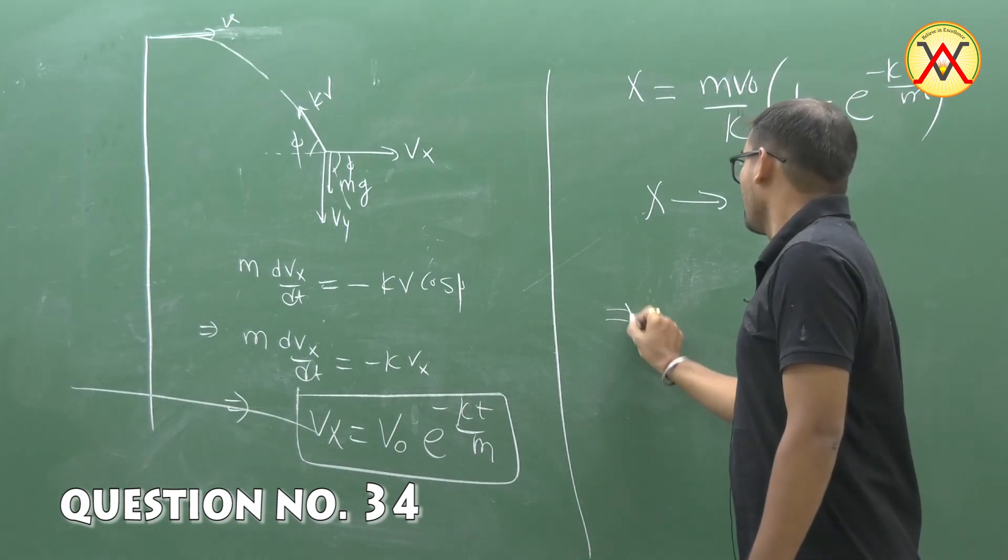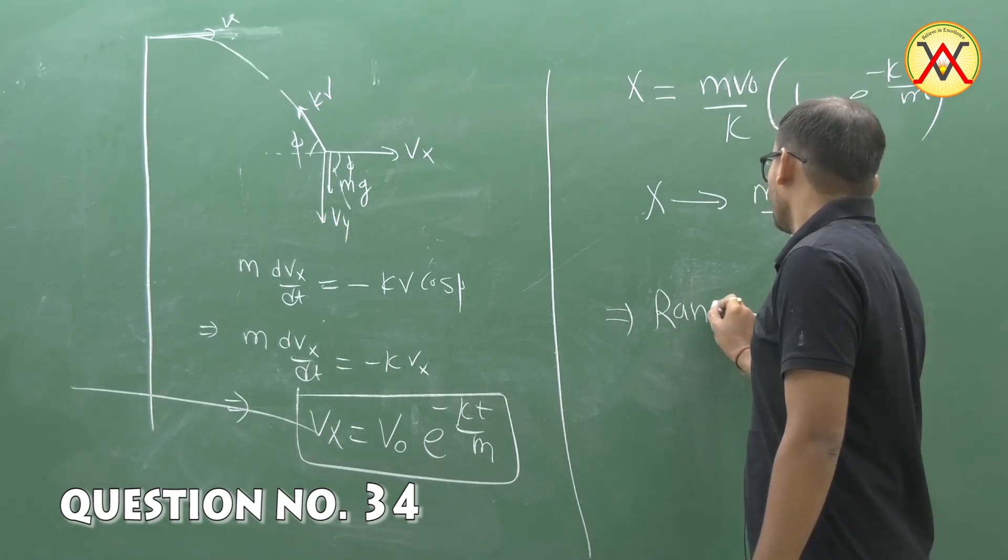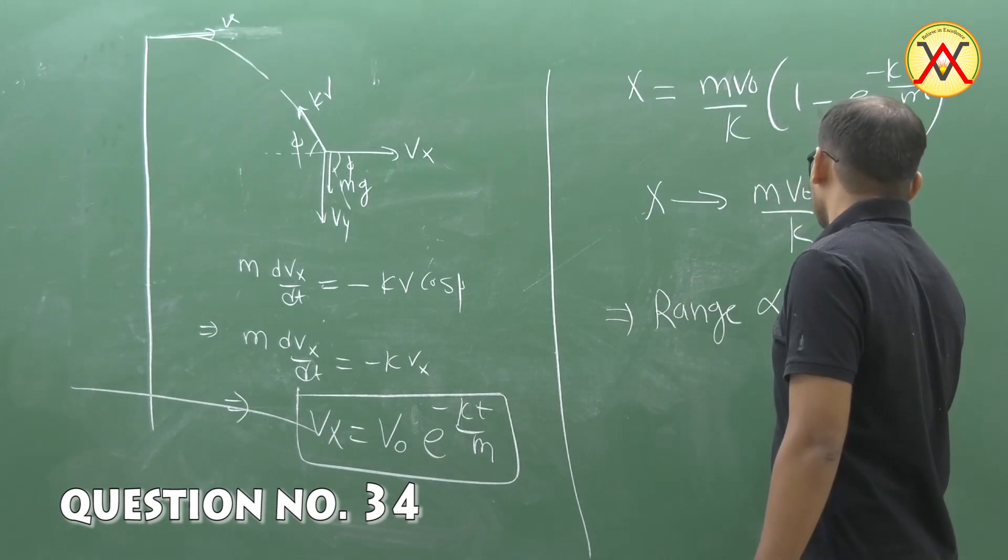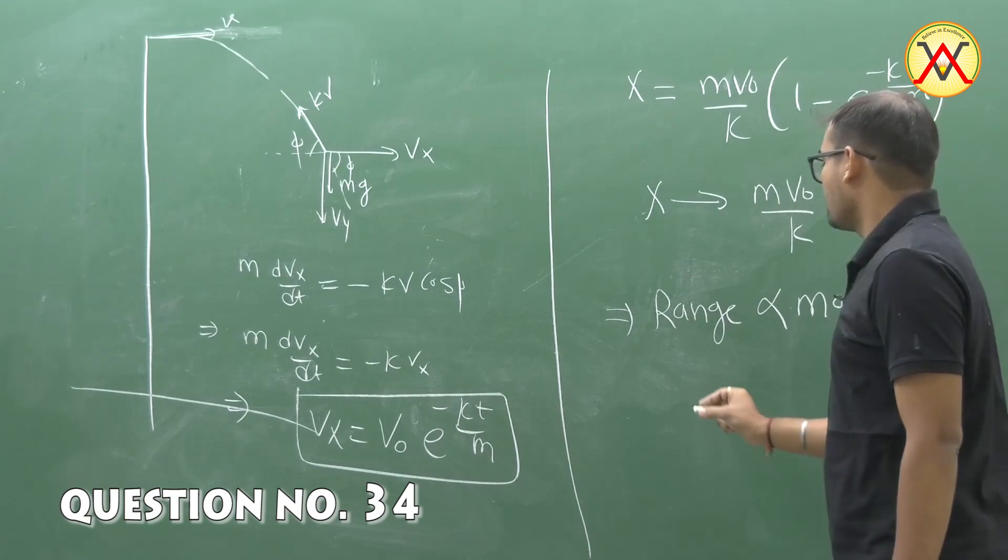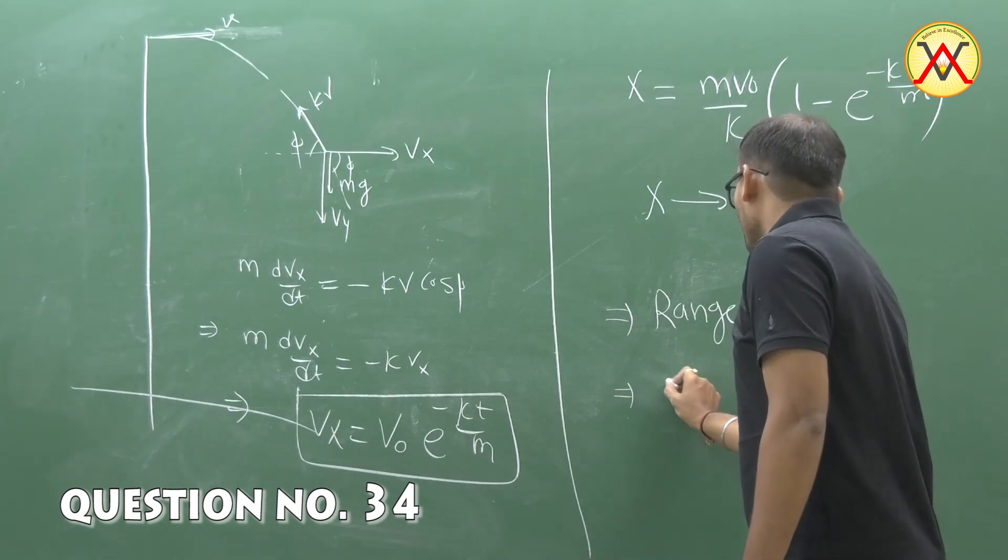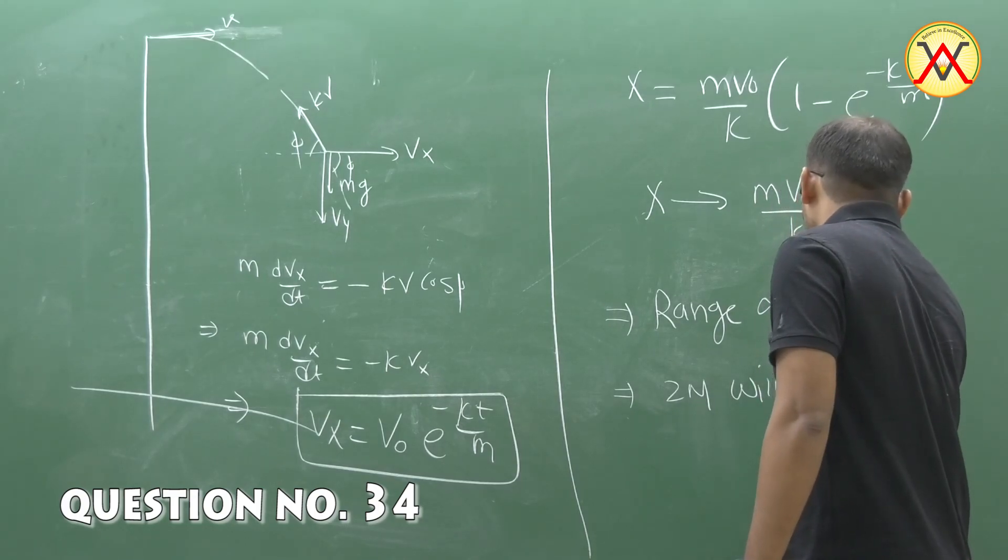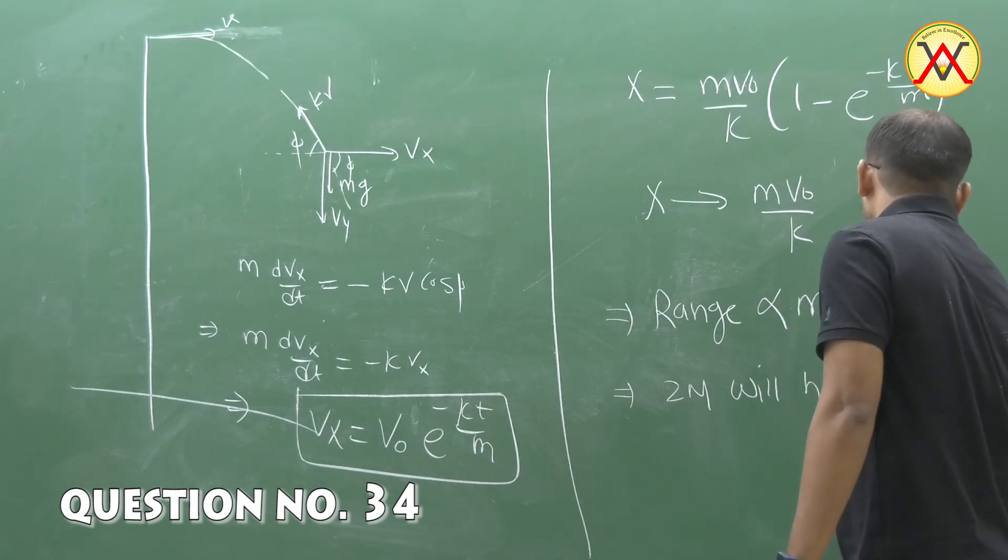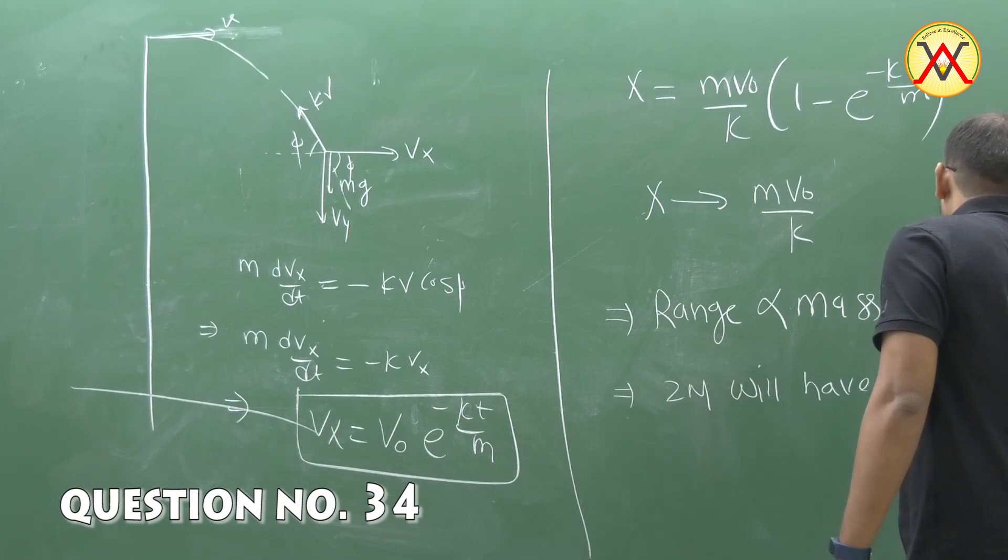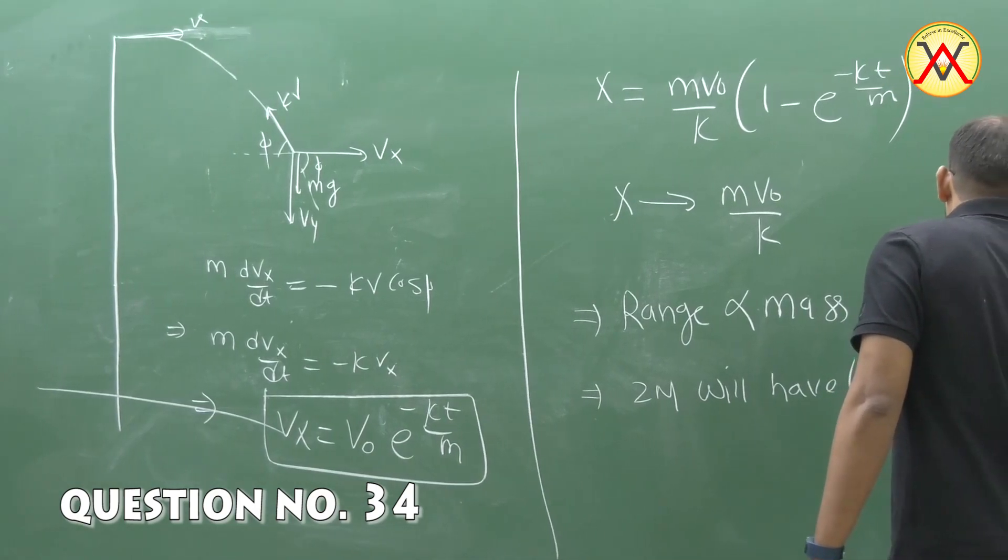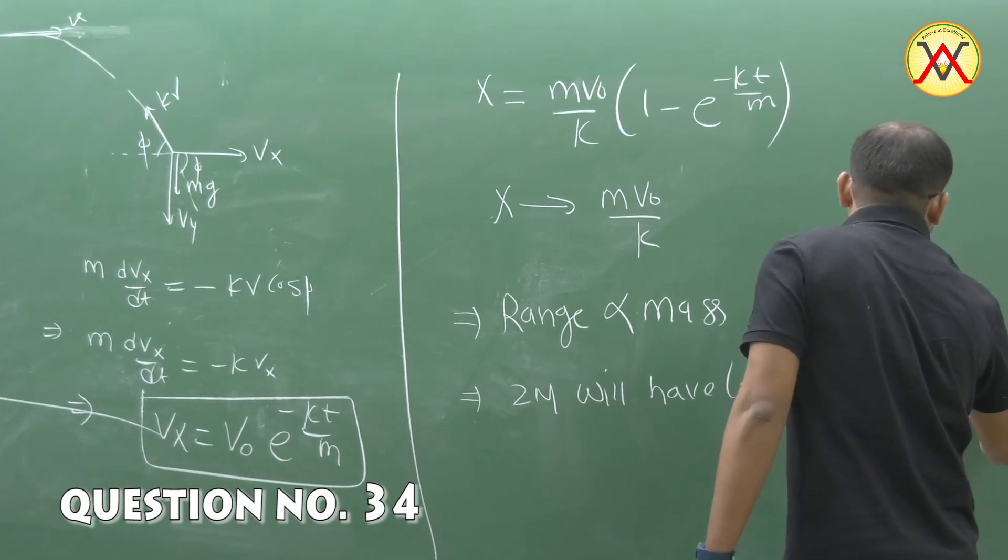That means range is directly proportional to mass. That means 2m will have larger range than m.